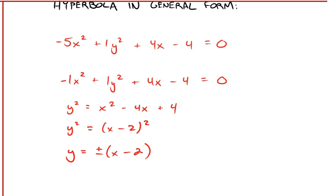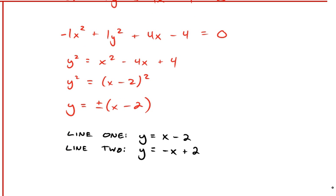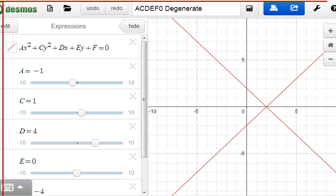Take the square root of both sides. We get y = ±(x - 2). This gives us two linear equations. y = x - 2 and y = -x + 2, which is what we have in the graph.